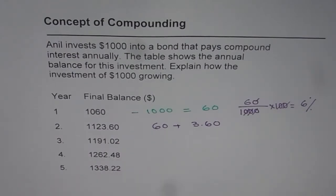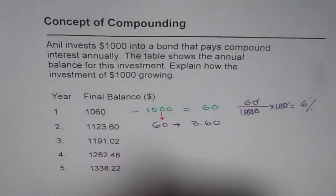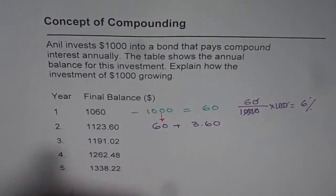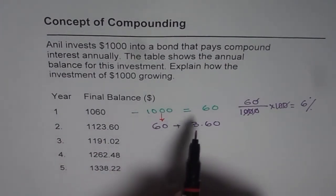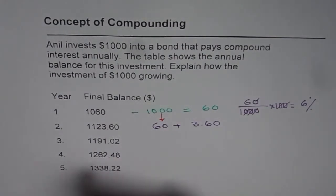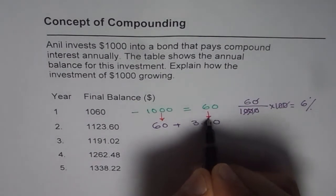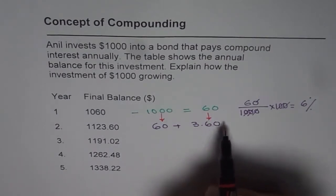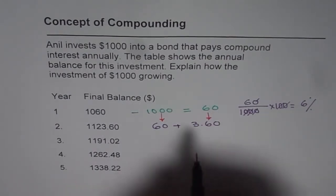So from where do we get that extra $3.60? On the $1000 invested, I again get interest of 6%, which is $60. But I also get something extra. At the end of the first year I earned $60, and at the end of the second year I get another $60 on the principal, but I get something extra — and that is what compounding is all about. You are getting interest on the interest earned.